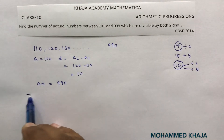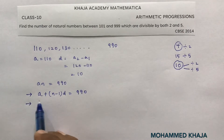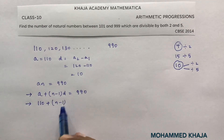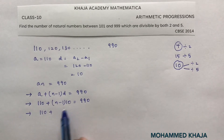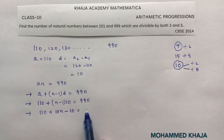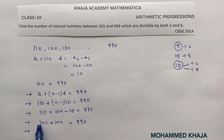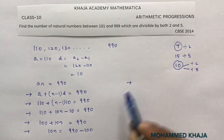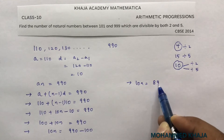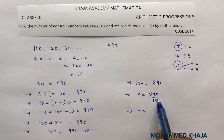We need to find the number of terms using the nth term formula: a + (n-1) × d = 990. Substituting: 110 + (n-1) × 10 = 990. This gives 110 + 10n - 10 = 990, so 100 + 10n = 990. Transposing: 10n = 990 - 100 = 890, so n = 890 / 10 = 89.